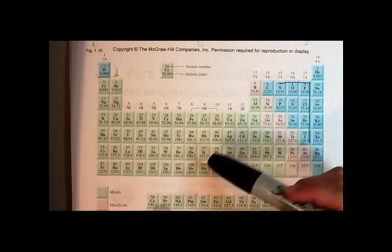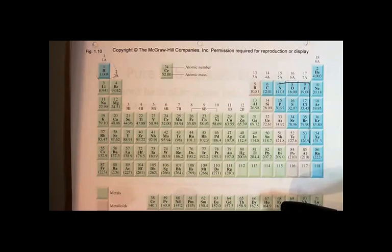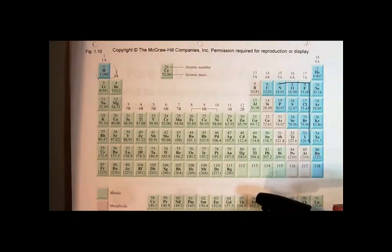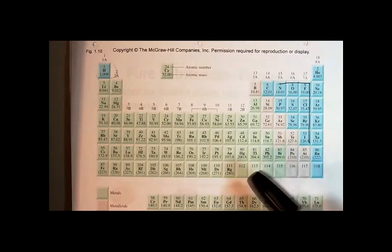So we have these two broad categories. Now we have this way that we're organizing matter and we're getting more and more detailed. We started with mixtures versus pure substances, then pure substances are compounds and elements. Now we're looking at the elements and seeing that the elements are divided even further and described as metals or non-metals or metalloids that have properties that are in between the metals and the non-metals.